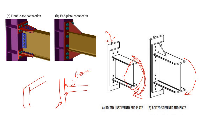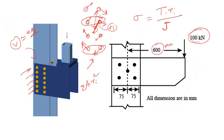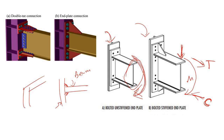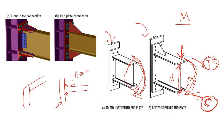Due to this moment, tension is produced on one side and compression on the other. The shear force is transferred the same way as in a torsional connection. The moment M is first converted into a tensile force and a compressive force. If the depth of the beam is d, then the tensile or compressive force equals M divided by d.